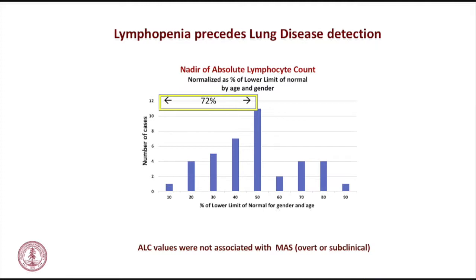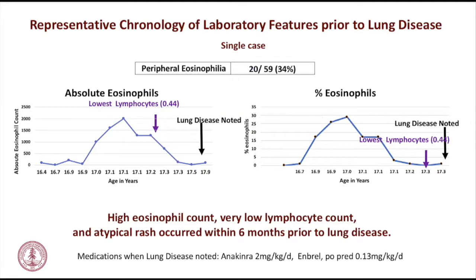Lymphopenia unexplained by MAS is another feature. We looked at hemoglobin, ferritin, and absolute lymphocyte count at the same time. We normalized for age and gender, and in the prodromal period, lymphopenia can be profound. Eosinophilia is another marker — if you have eosinophilia and give high-dose methylprednisolone, the eosinophils disappear, so these must be kids not on high-dose steroids at that time. One recently added case had 1,700 eosinophils a month and a half before lung disease, with an absolute lymphocyte count of only 400.